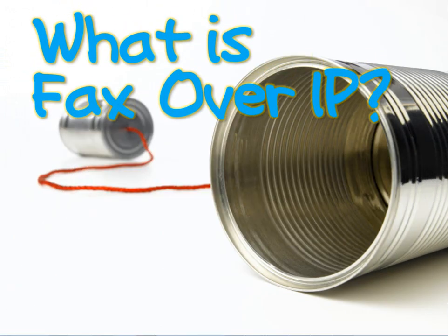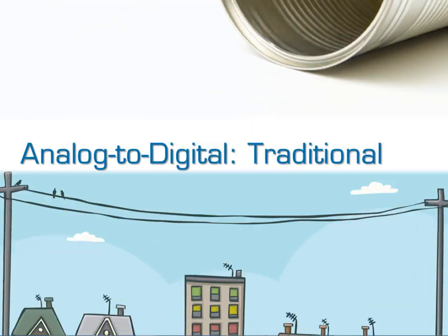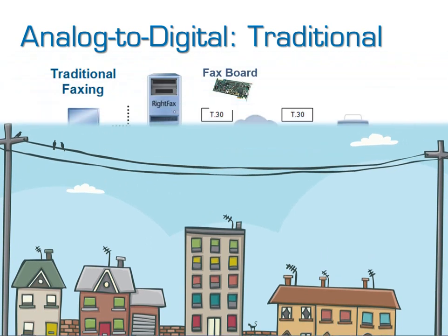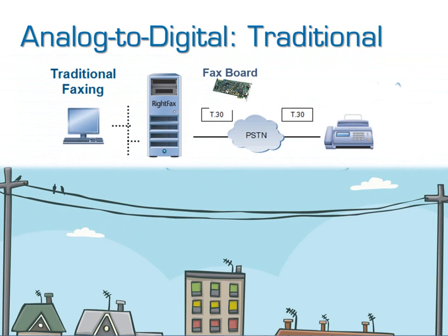First we'll need to review what exactly is fax over IP. When faxes are sent, they are sent over standard copper lines — basically fax tones sent across. These tones are received in a traditional fax system into a fax board. The board hears these tones and translates them into electrical current into the fax server itself, usually through a PCI slot it's plugged into.